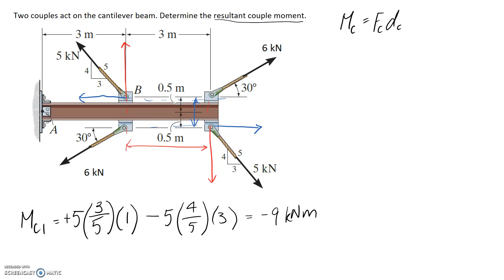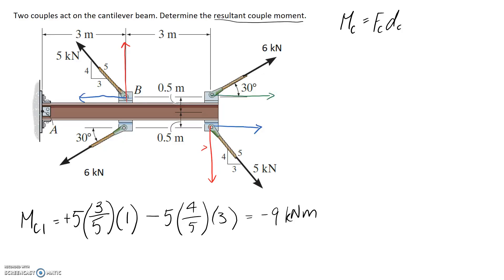Now we look at the other couple caused by the 6kN forces. Again, it's in our interest to separate these forces into horizontal and vertical components, since we're given horizontal and vertical distances to work with, which limits the trigonometry required. I'll draw the horizontal parts in green and the vertical parts in grey.